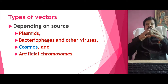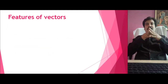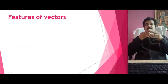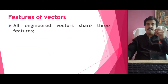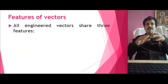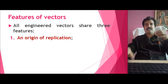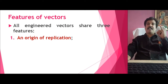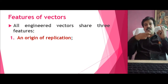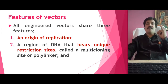If you take any vector, the vector should carry certain basic features. All the engineered vectors currently available are having these three basic characteristics. First, it contains a replication site, an origin of replication, so it can reproduce itself.